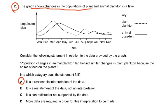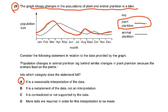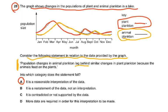Question 28: the graph shows changes in the population of plant and animal planktons in a lake. The plant planktons show a peak, then another peak and then decrease. The animal plankton follows the plant plankton peaks but with a slight lag — their peak comes a little later. Consider the statement: population changes in animal planktons lag behind similar changes in plant plankton because the animals feed on the plants.